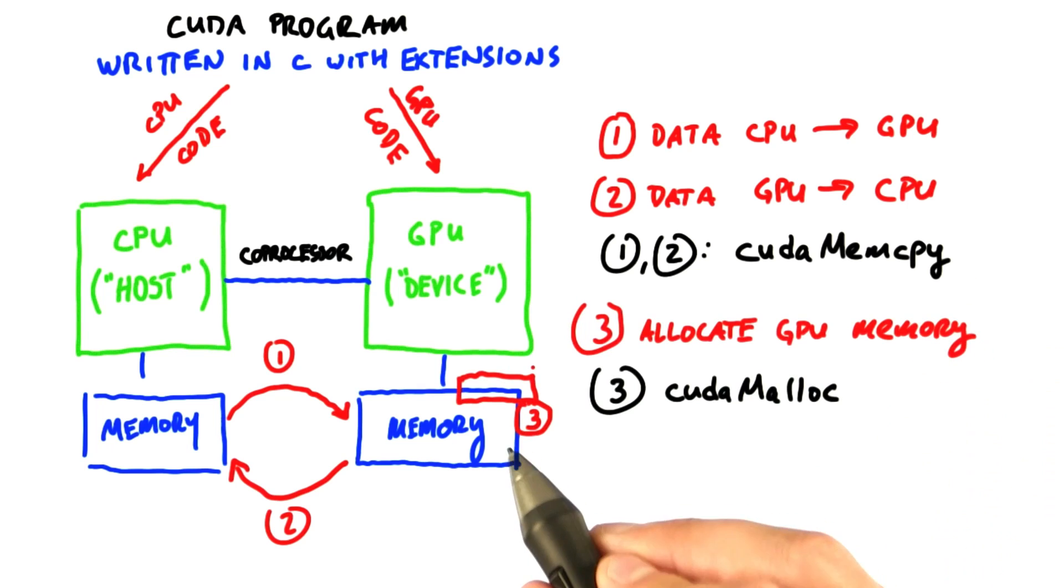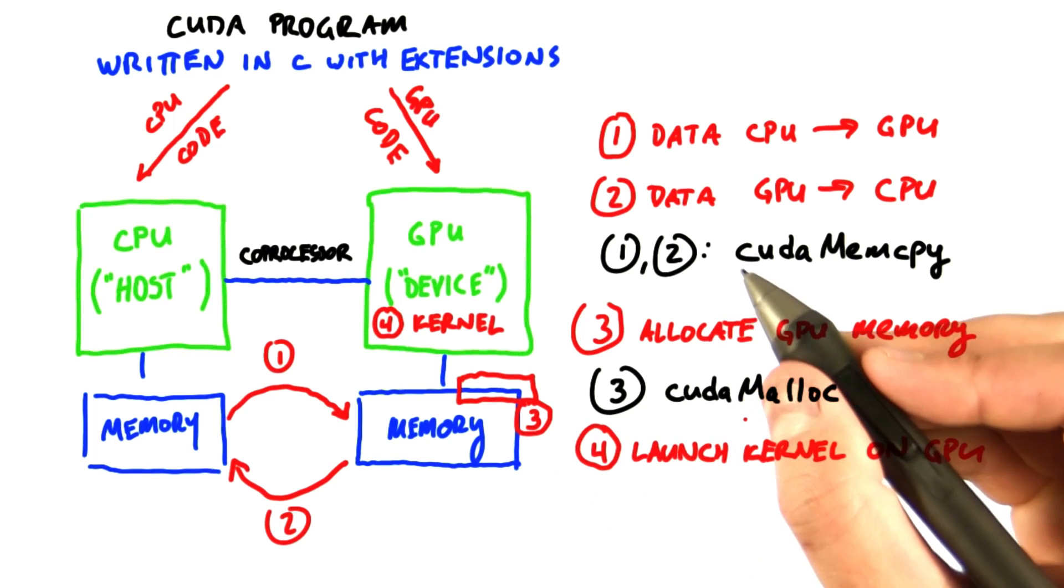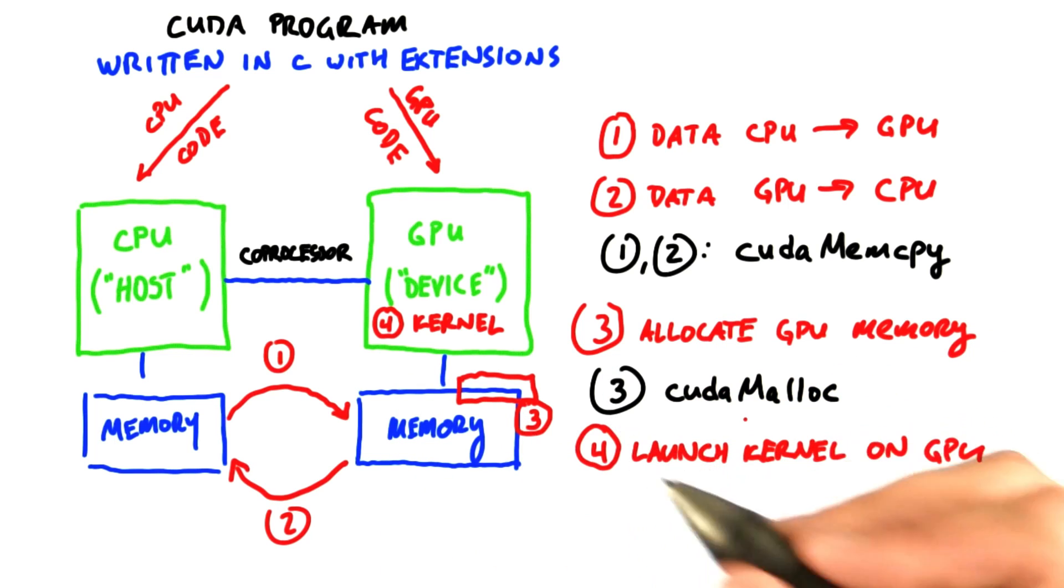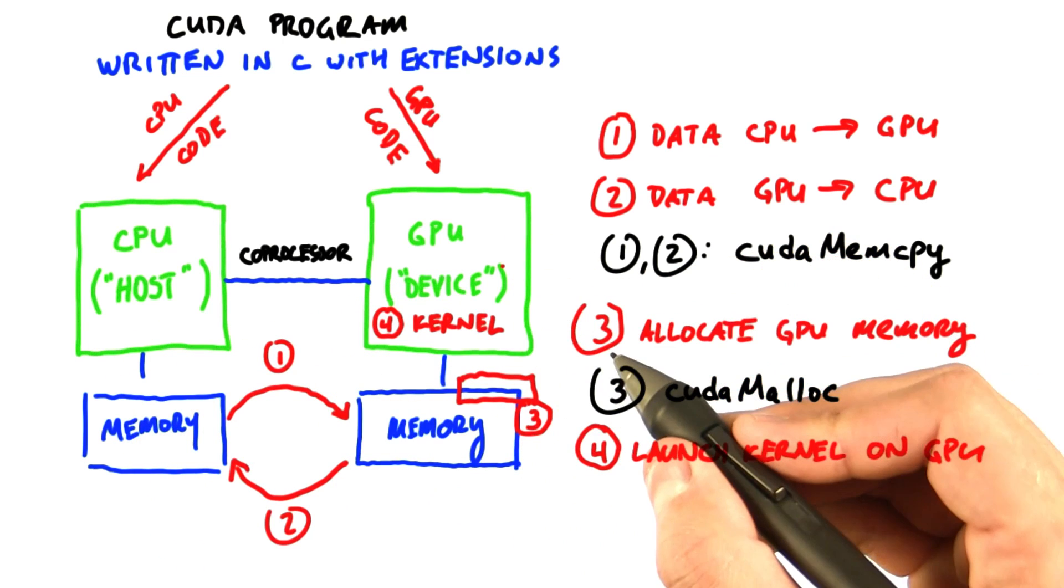Three, allocating memory on the GPU. In C, this command is malloc, so in CUDA it's CUDA malloc. And four, invoking programs on the GPU that compute things in parallel. These programs are called kernels. Here's a lot of jargon in one phrase: we say that the host launches kernels on the device.